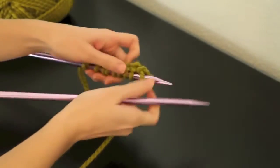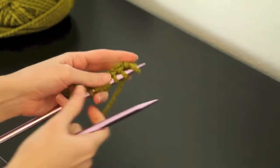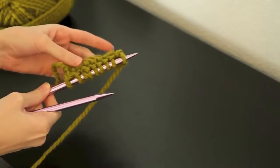Now that we're on the third row, we're back to the knitting side of our work. On the third row, we're also going to be adding buttonholes.